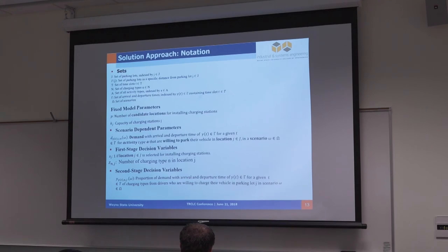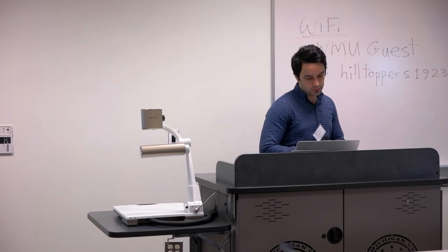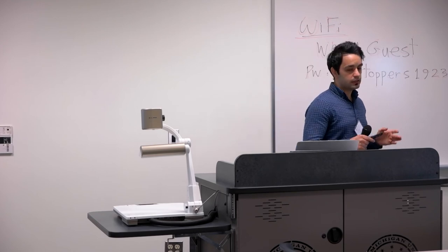For problem notation, we have set of parking lots, time slots, and charging types. We have activities of the driver, for example shopping, meals, study, and other activities. We have set of arrival and departure. We have fixed parameters: the number of candidate locations for installing charging stations and capacity of each charging station. We have scenario-dependent parameter which is demand, related to activity of drivers in each time slot.